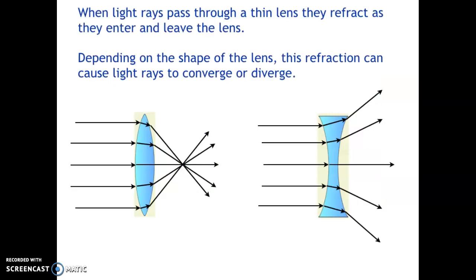As light passes through any type of lens, it's going to refract according to Snell's Law, as light passes between air and a material with a different index of refraction.